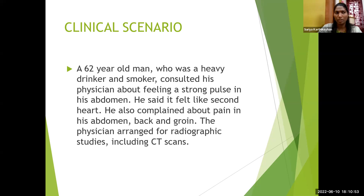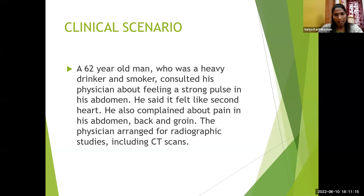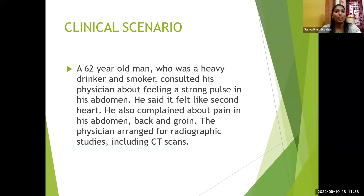The patient said it felt like a second heart. Even feeling the heartbeat — called palpitation — is an abnormal thing. So this is an abnormal feeling in the abdomen. The physician arranged for radiographic studies including CT scans. He's an old man, heavy drinker and smoker, feeling a strong pulse in the abdomen. All these things are narrowing down to aneurysm. The topic is about spinal cord external features, but the clinical scenario is about aneurysm.